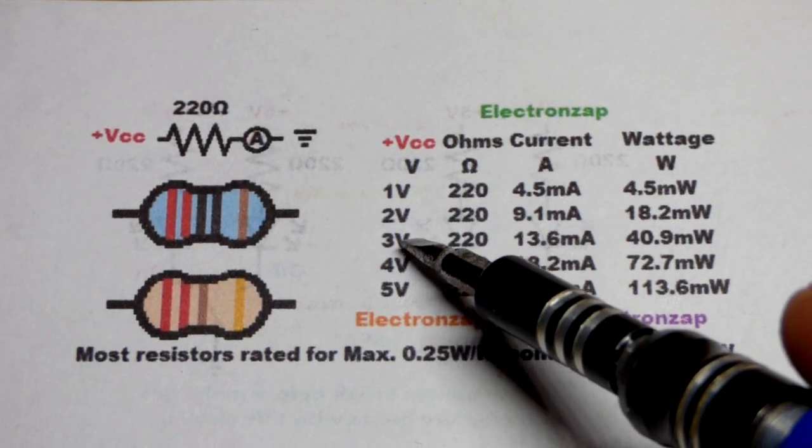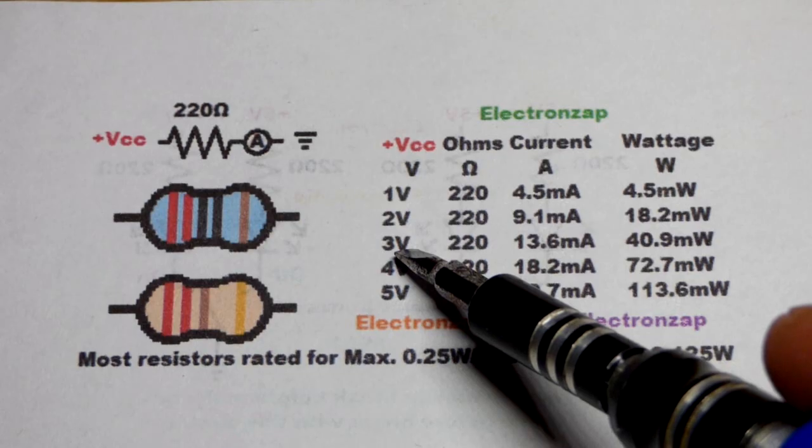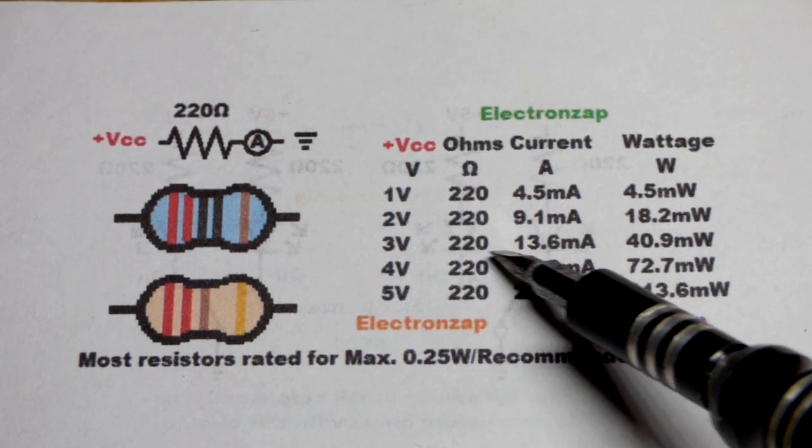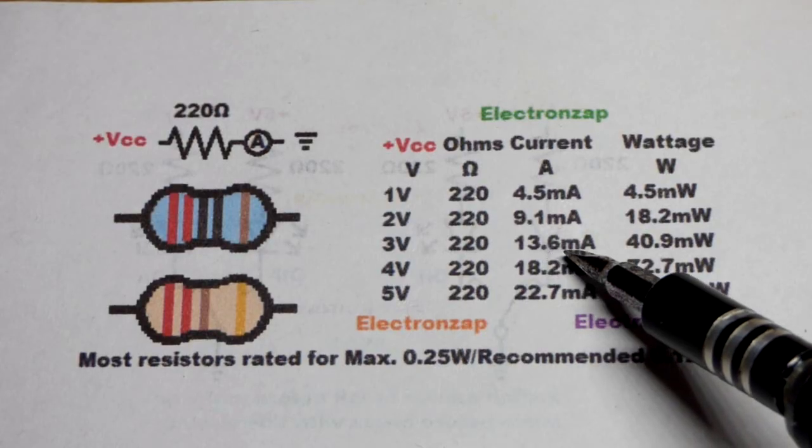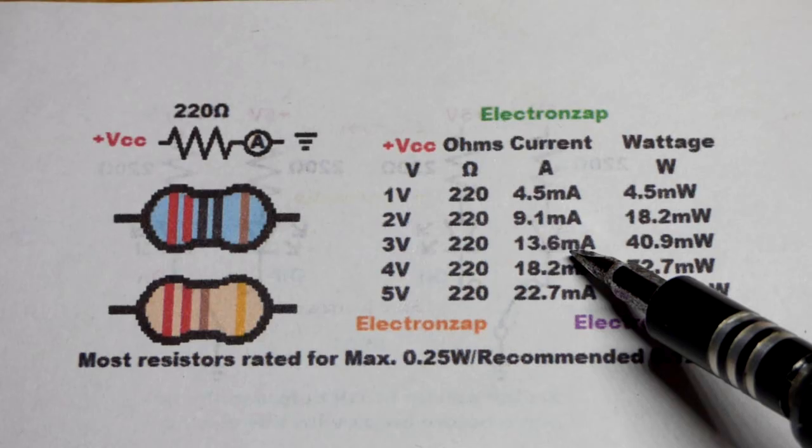But if you're using 5 volts, the LED is going to actually drop some of the voltage. If you're using a red LED, then you can expect, if you're using a 220 ohm resistor in series with it, about 13.6 milliamps of current to flow through the two of them.